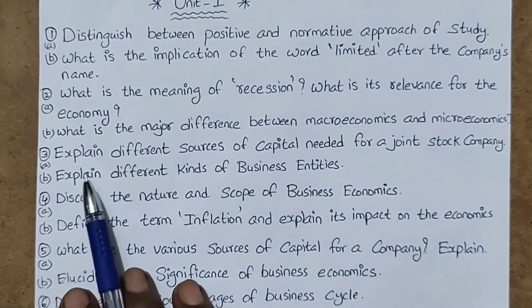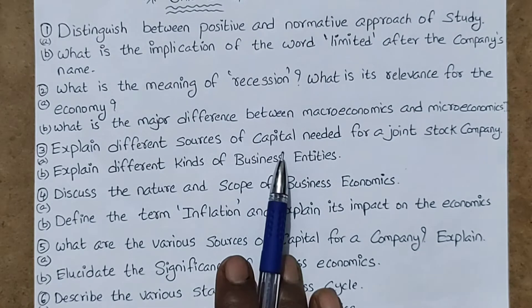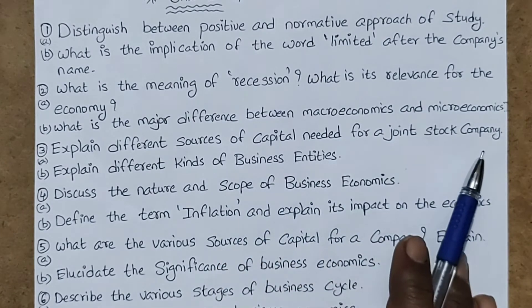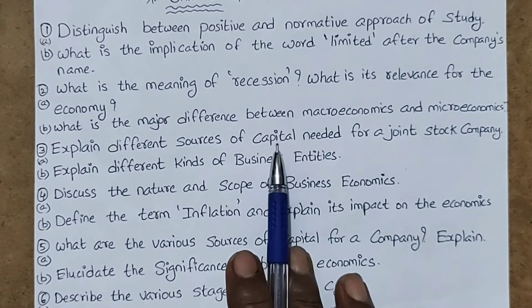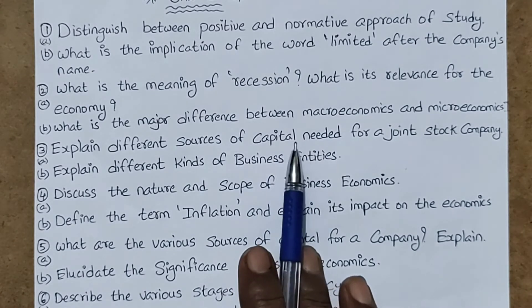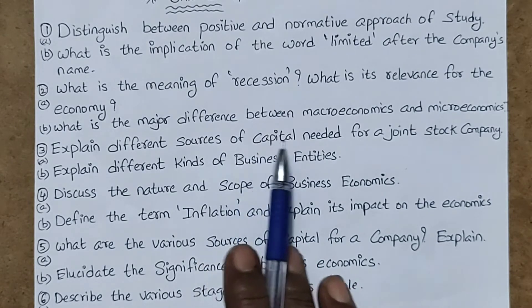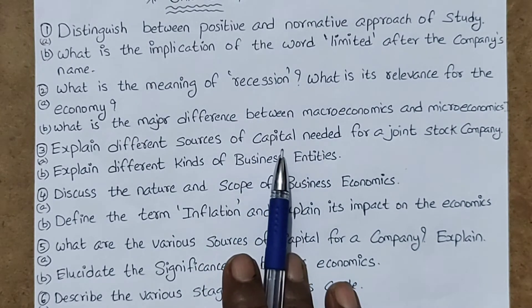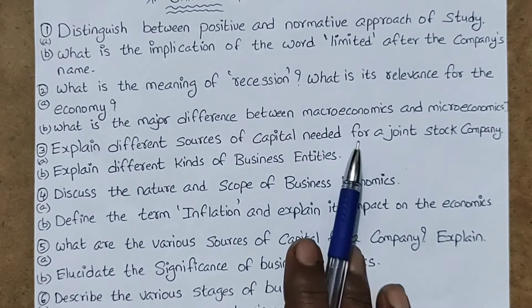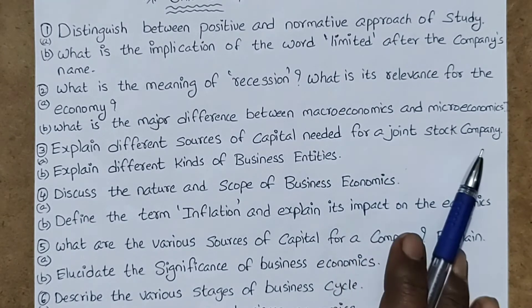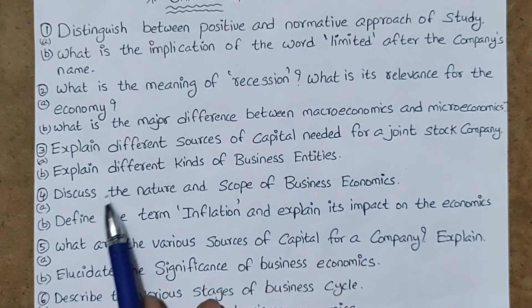Third question, A bit: explain different sources of capital needed for a joint stock company. First, write the side heading 'capital,' give the definition for capital, and explain what are the different sources of capital — how many sources are related to this capital which is needed for a joint stock company. Next, write about the joint stock company.